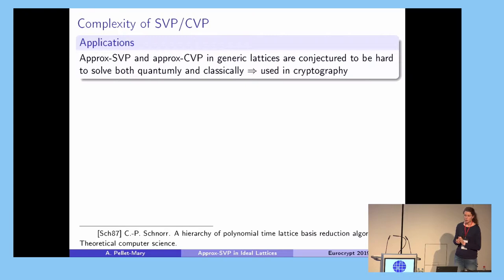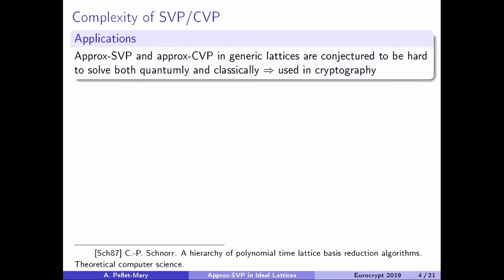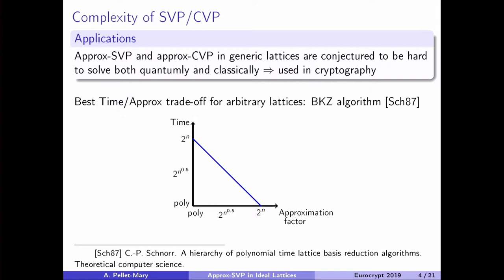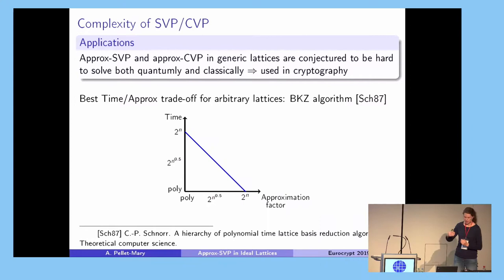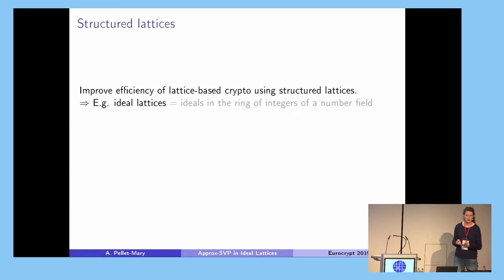Why do we care about SVP and CVP? When you want a small approximation factor, it's conjectured to be hard even in a quantum setting, so it can be used to build cryptographic primitives. For arbitrary lattices, the best asymptotic algorithm is BKZ: you can get 2^n approximation factor in polynomial time, or polynomial approximation factor in 2^n time, and all trade-offs in between. To improve efficiency, we can use structured lattices — an example of which are ideal lattices.